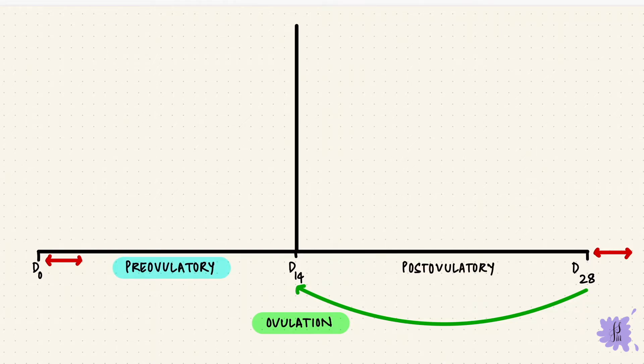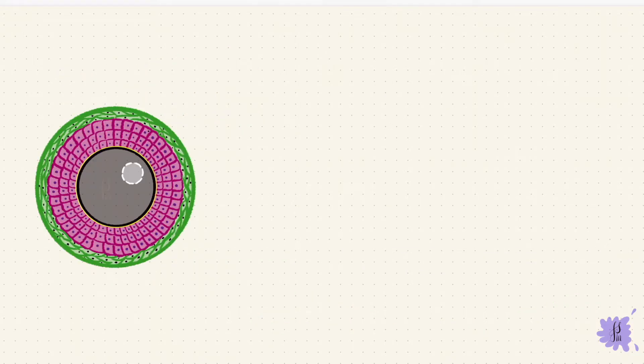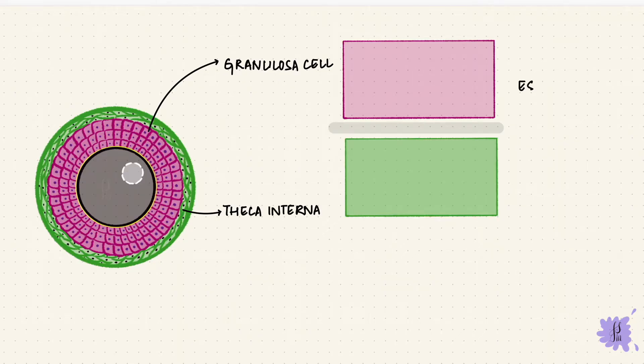The follicles of the ovary grow during the pre-ovulatory phase, and that's why this is called the follicular phase. Some of the primordial follicles grow and form primary follicles, then antral follicles, and one follicle dominates and matures into a Graafian follicle, while the others undergo atresia. The follicle has granulosa cells and theca cells, and they together form estrogen. The granulosa cells have FSH receptors. As the follicle grows, the number of granulosa cells increase, so the number of FSH receptors increases as well.